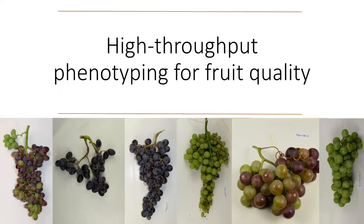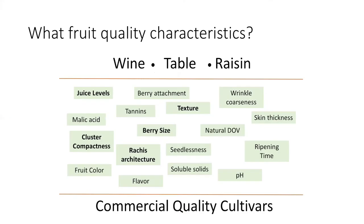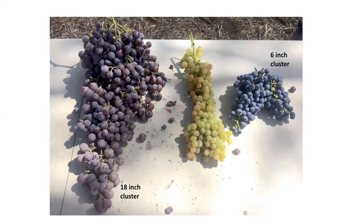Continuing along the same theme, I'm going to talk about high-throughput phenotyping for fruit quality. I'll take a step back though — a lot of quality characteristics in past Vitis Gen work were related to wine grape quality, and with Vitis Gen 2 we wanted to add components related to table grape quality. I predominantly work with table grapes, where important traits include texture, berry size, and cluster architecture, which play a large role in consumer acceptance. The diversity of shape, size, berry color, and cluster compactness present in existing grape varieties is considerable.